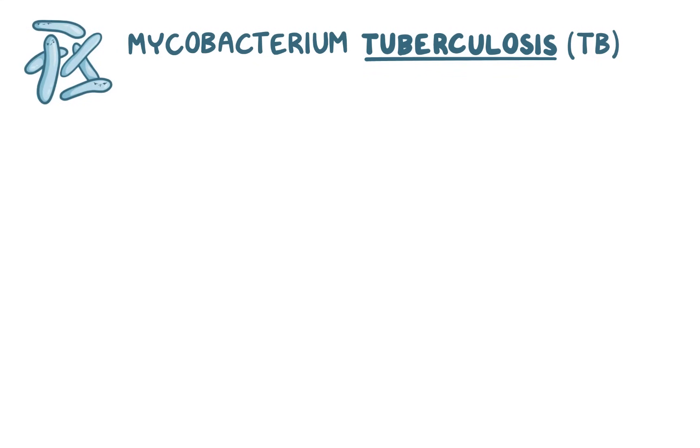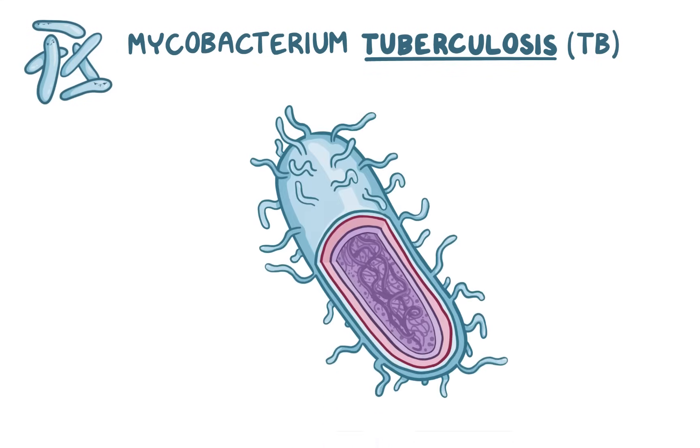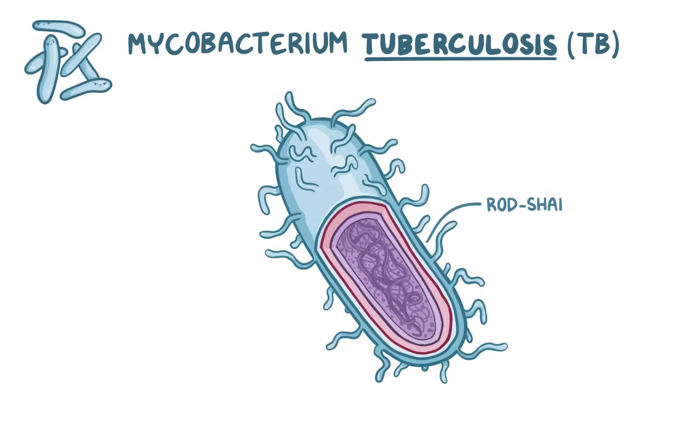Mycobacteria are an interesting bunch — they're slender, rod-shaped, and need oxygen to survive. In other words, they're strict aerobes.